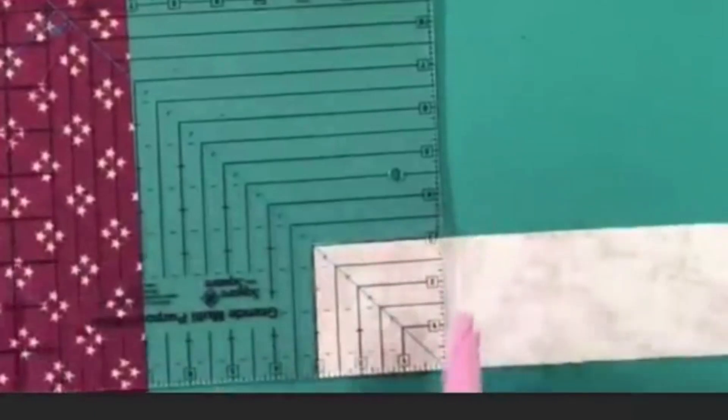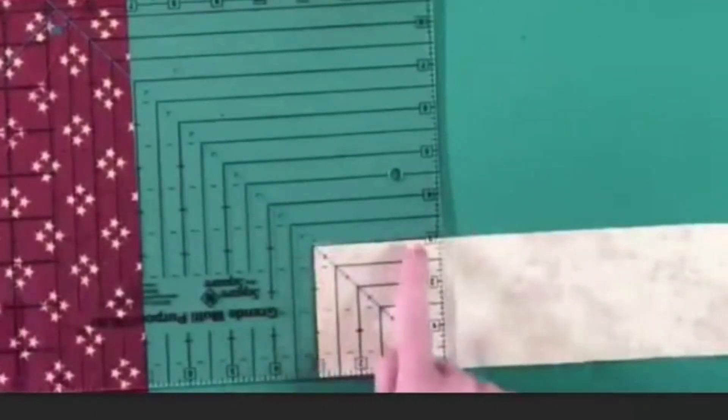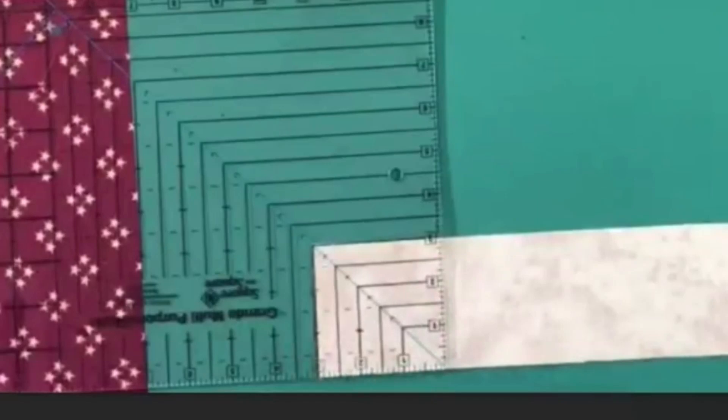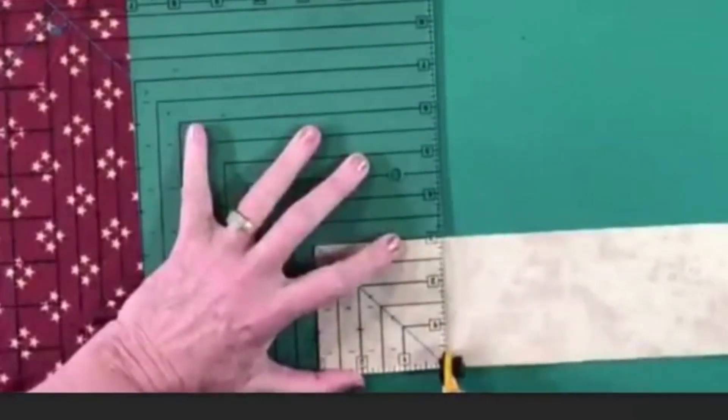Making sure that my square is staying square, that I have the good 90 degree arcs in those corners. And I'm just going to cut.